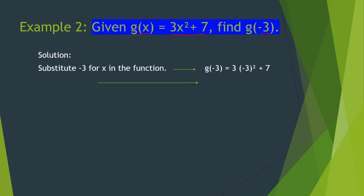Let's substitute negative 3 for x in the function. So we have g at negative 3 is equal to 3 times negative 3 squared plus 7, because that was the given. We replace x with negative 3, keeping the exponent 2, and we have the operation with 7.